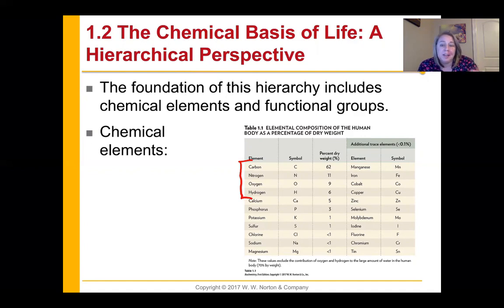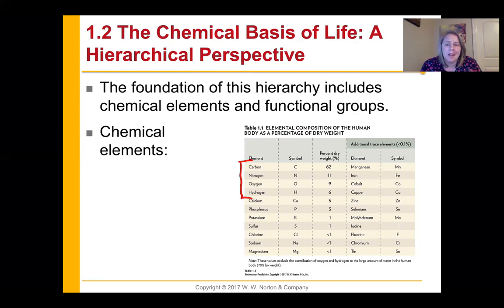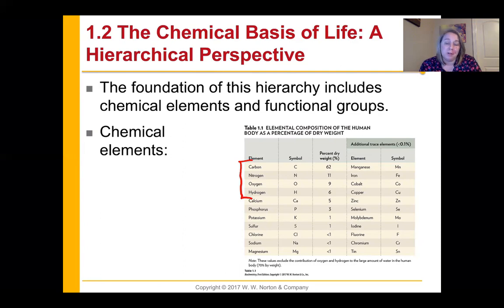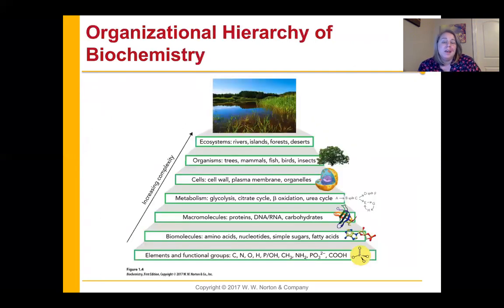The other things listed are also important. You have ions that are very important in cell signaling — like calcium and sodium — which allow cells to communicate. You also have metabolites that are super important, like cobalt and iron. A lot of different chemicals are very important for the proper functioning of our bodies, and many of these components come together to make very common functional groups.